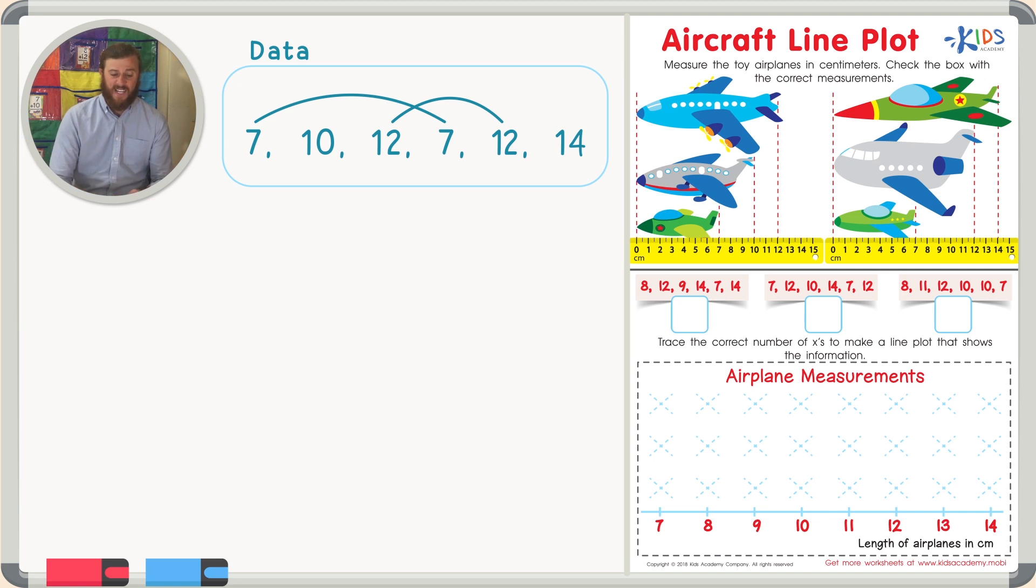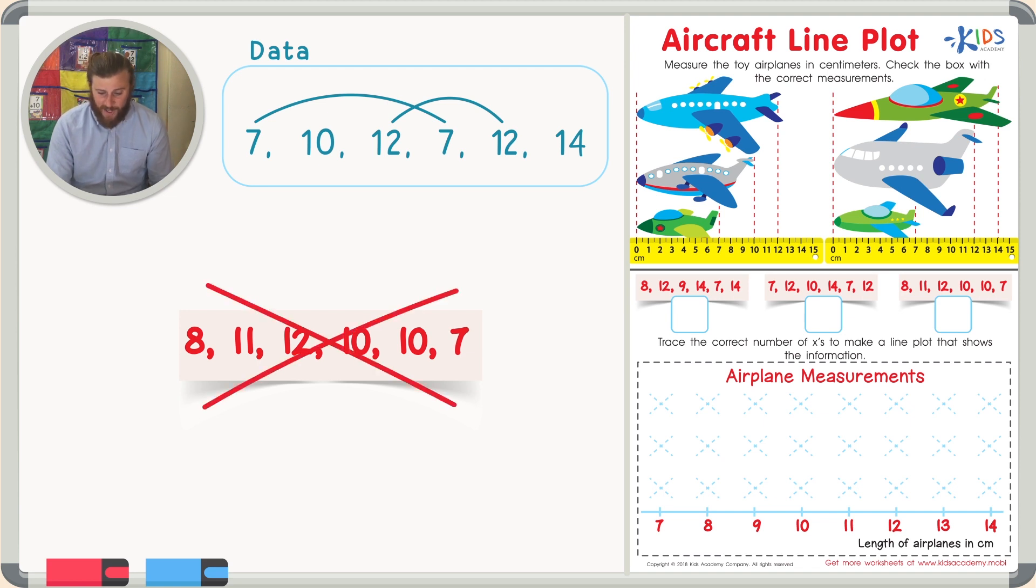Can you find a data set below that matches those numbers? Well, I know I need two sevens. So first, let's look at the first set of numbers and see if there's two sevens. Eight, 12, 14, seven, four. This can't be right because there's not two sevens. Our second data set has a seven, a 12, a 10, a 14. That's good so far. It has another seven and another 12. So it has two sevens and two 12s just like our numbers. So I think this is correct. Let's look at the last set just to be sure. And in this set, I only see one seven. So this can't be correct. So the middle set of numbers is correct.